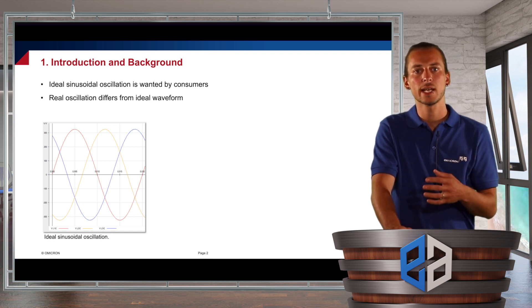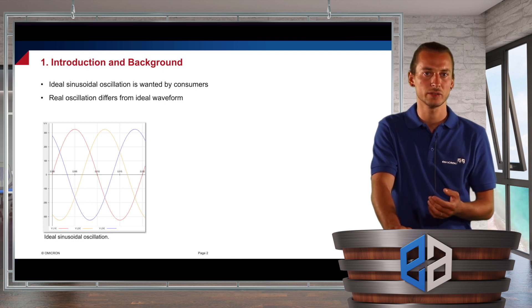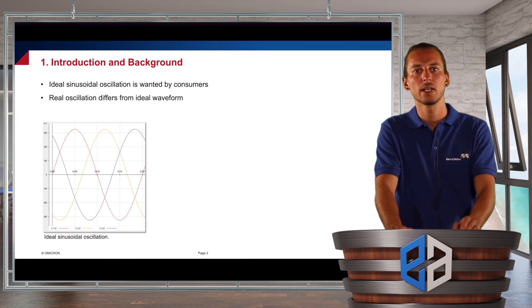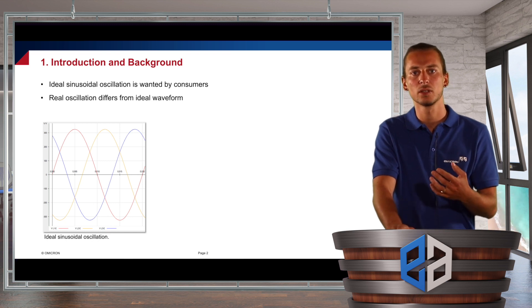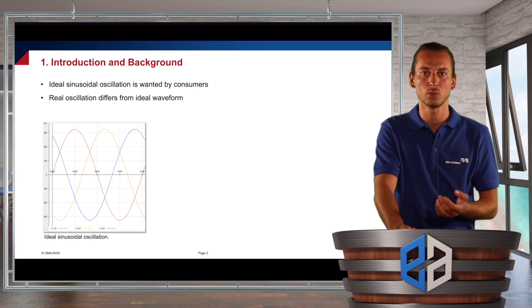As you all know, in the electrical grid a sinusoidal oscillation is wanted by the consumers and also by the grid operators. But in reality this sinusoidal waveform is not given, but we have some kind of a disordered waveform which differs from this ideal waveform.